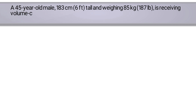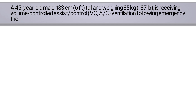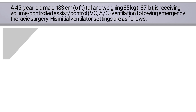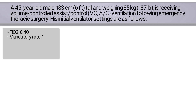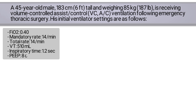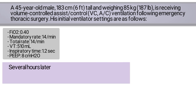A 45-year-old male who is 6 feet tall and weighs 187 pounds is receiving volume-controlled assist-control ventilation following emergency thoracic surgery. His initial ventilator settings are as follows: FiO2 of 40%, mandatory rate of 14 breaths per minute, total rate of 14 breaths per minute, tidal volume of 510 milliliters, inspiratory time of 1.2 seconds, and a PEEP of 8. Several hours later, the high pressure alarm on the ventilator is triggered.